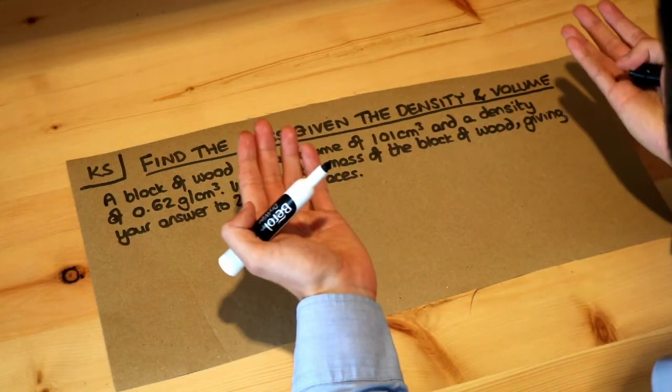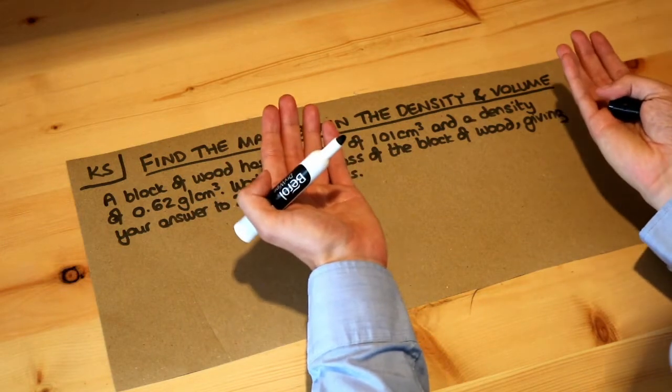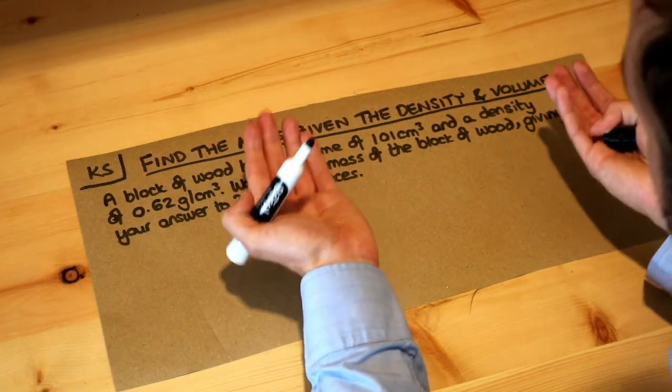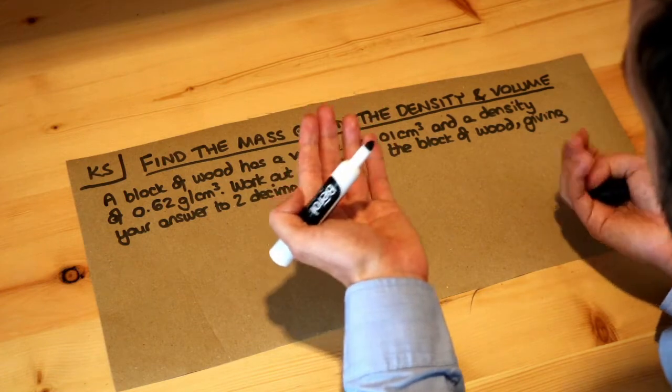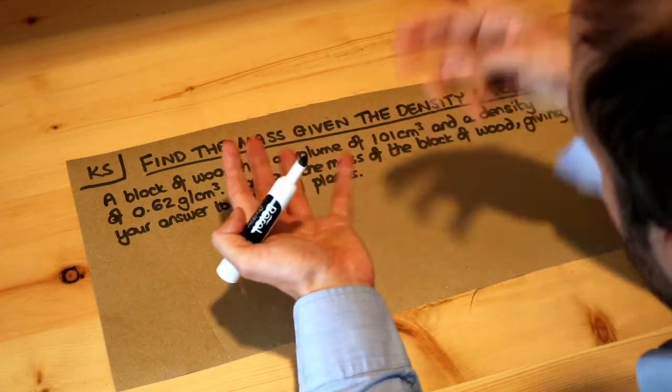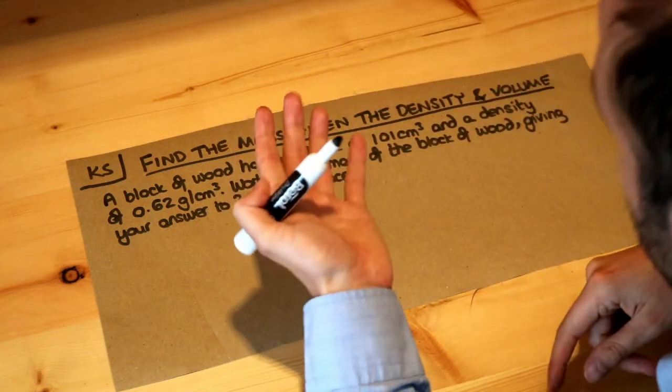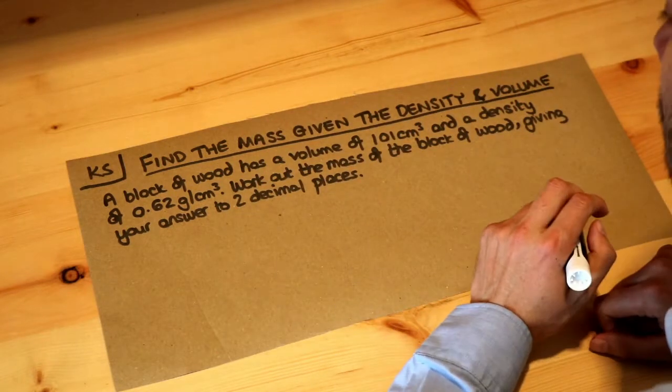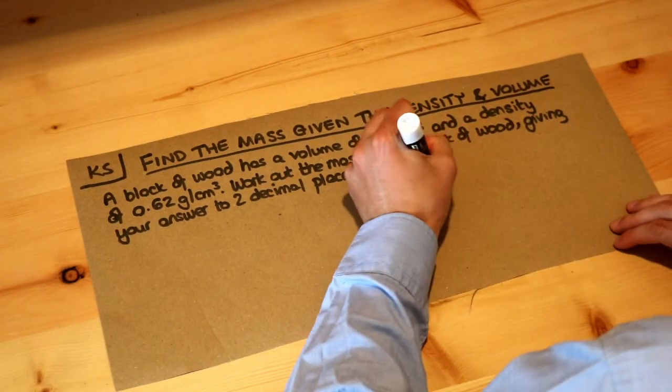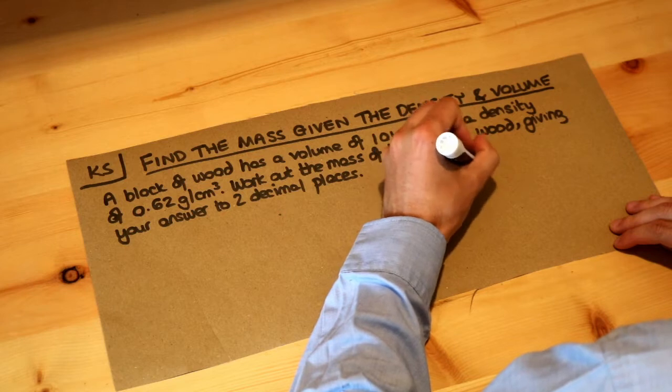For example, if you had two balls and they were the same size, the same volume, it could be that one is heavier than the other, and that's because one is denser. The matter is more tightly packed in, and the density would be higher for that particular ball. And we saw a formula for that.